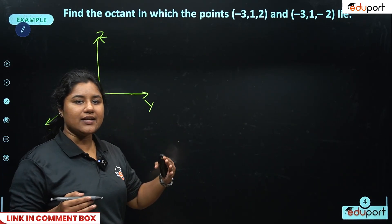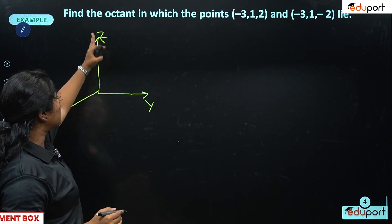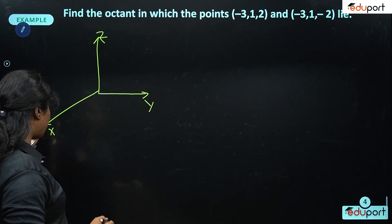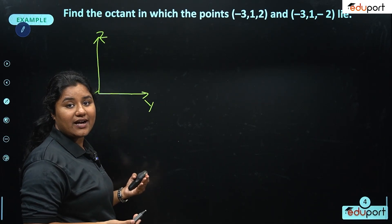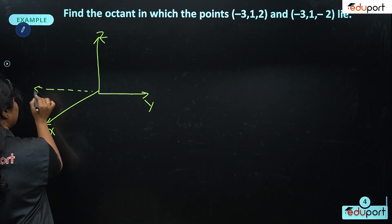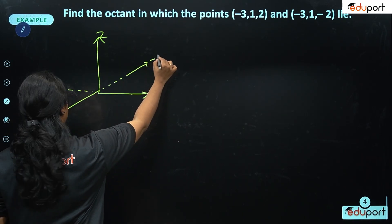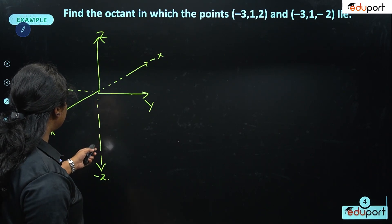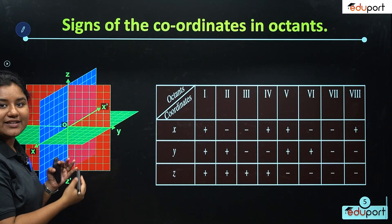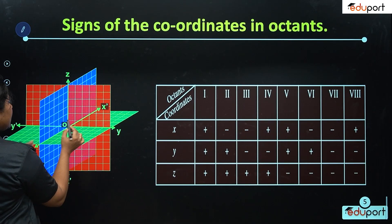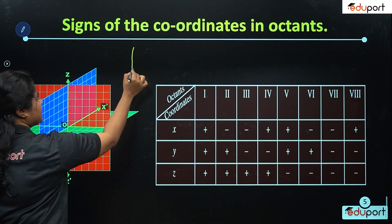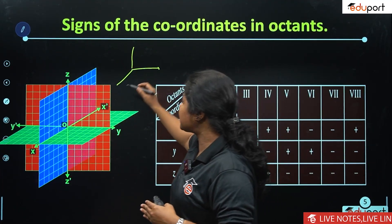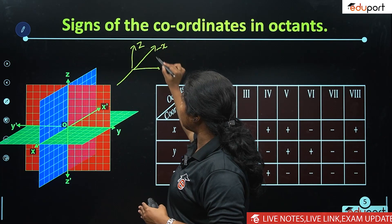If you look at a room, the corner represents the axes. Our own room has positive x, positive y, and positive z. The room behind has minus x, plus z, and plus y. The room to the side has minus x, minus y, and plus z. Another room has plus z, plus x, and minus y. We consider a building of rooms to understand the eight octants.